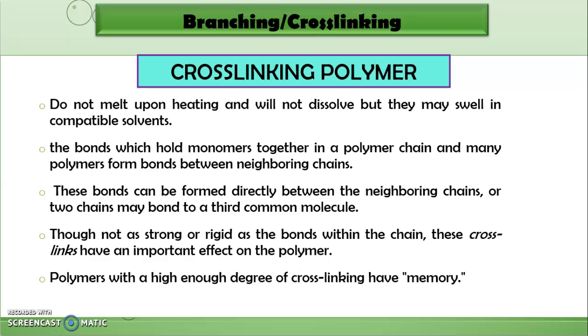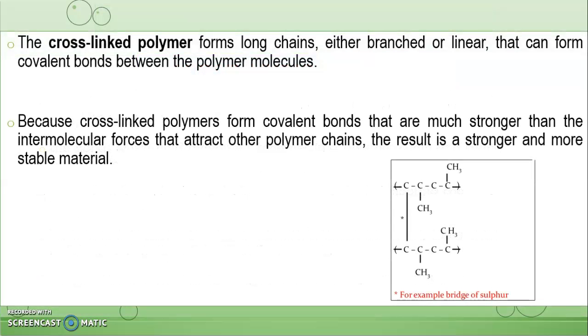We see cross-linking. Cross-linking means that materials do not melt upon heating and will not dissolve, but they may swell in compatible solvents. The bonds which hold monomers together in a polymer chain form bonds between neighboring chains. Though not as strong or rigid as the bonds within the chain, these cross-links have an important effect on the polymer. Polymers with a high enough degree of cross-linking have what we call memory. The cross-linked polymers form long chains, either branched or linear, that can form covalent bonds between the polymer molecules. Because cross-linked polymers form covalent bonds that are much stronger than the intermolecular forces that attract other polymer chains, the result is a stronger and more stable material.